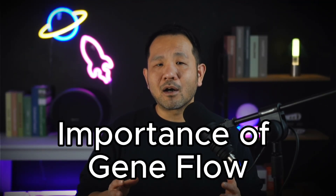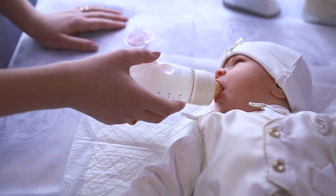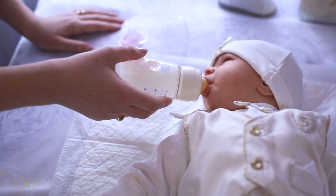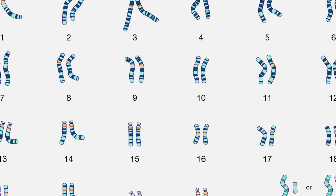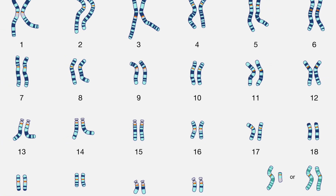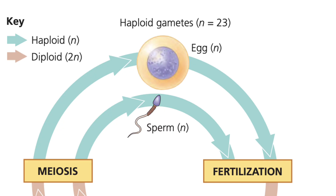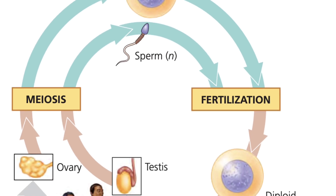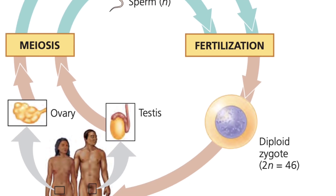Now that we know what a species is, we can begin to think about what it is that holds us together as a single interbreeding species. One simple way to approach this question is by asking why humans and other humans can produce viable human babies. Back in Unit 5, we learned about the human karyotype, which contains 23 pairs of chromosomes for a total of 46. During fertilization, 23 chromosomes of the sperm cell are joined with the 23 chromosomes of the egg cell, which then forms a proper diploid zygote.